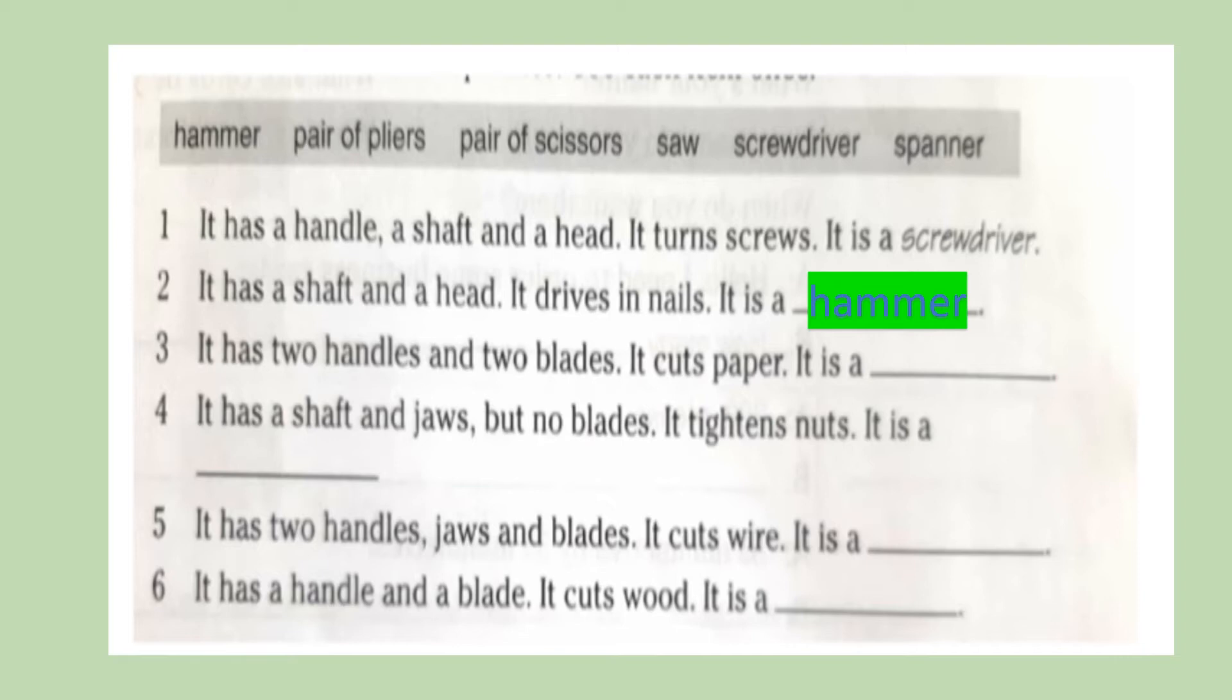Let's read them together before I give you time to answer them. It has two handles and two blades, it cuts paper. Number four: It has a shaft and jaws, but no blades, it tightens nuts. Number five: It has two handles, jaws, and blades, it cuts wire. Number six: It has a handle and a blade, it cuts wood. Pause the video for about two minutes to answer the questions, and then come back to check the answers.